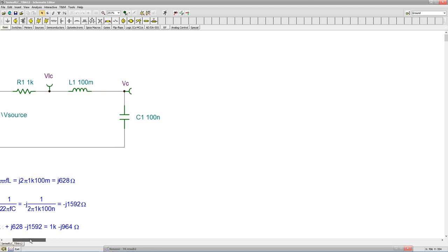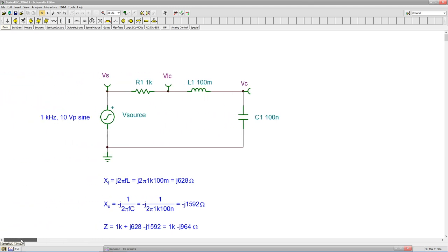So I've got a nice little circuit over here with three components. We have our voltage source, resistor, inductor, capacitor. So 1 kHz, 10 volt peak sine for the source, and I've already calculated the values for the reactive components.